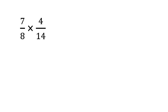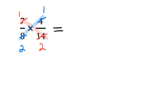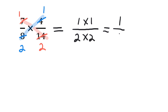So again, we're going to use the cross-reducing strategy, and we're going to use the 7 and the 14, and find the greatest common factor. In this case it would be 7. So we divide 7 by 7 to make 1, and we divide 14 by 7 to make 2. And then we're going to reduce the other way diagonally — the 4 and the 8. The greatest common factor between 4 and 8 is 4. So 4 divided by 4 is 1, and 8 divided by 4 is 2. Now if we rewrite it, 1 times 1 is the new numerator, and 2 times 2 is the new denominator. If we do the math, we get 1 over 4.